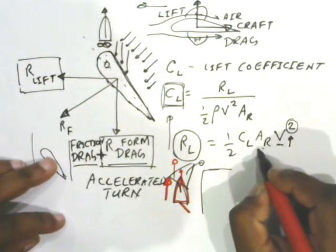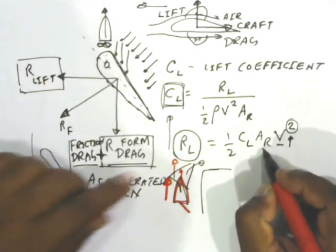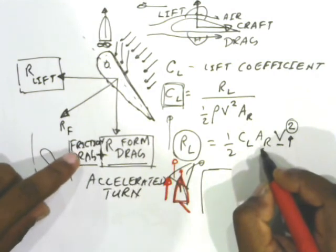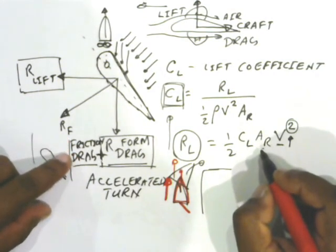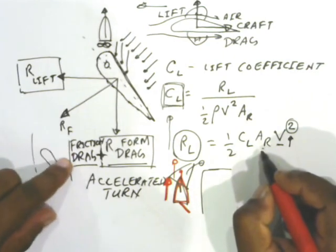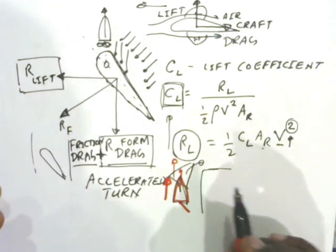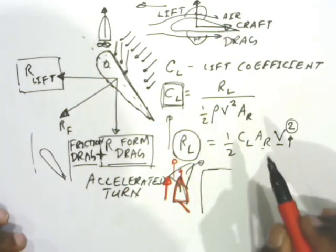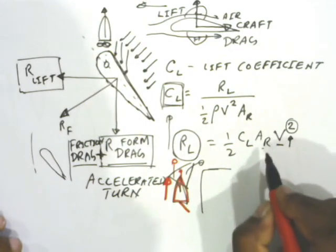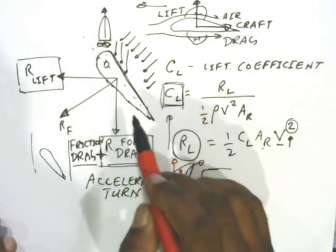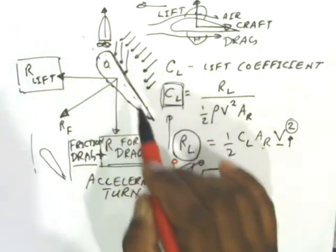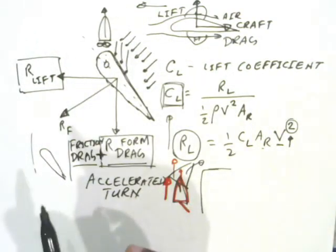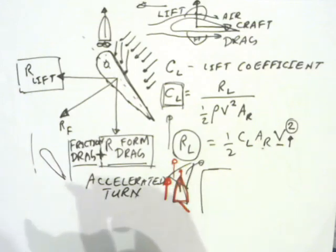Increasing the rudder area will increase the rudder lift, but there is a drawback: friction also increases. So there are certain aspect ratios maintained for the rudder — ships are not fitted with arbitrarily bigger or smaller rudders. There is a proper ratio to determine the area of the rudder, which we will look at later when discussing the construction of the rudder. Thank you very much, and in the next lecture we will look at more details about these forces.